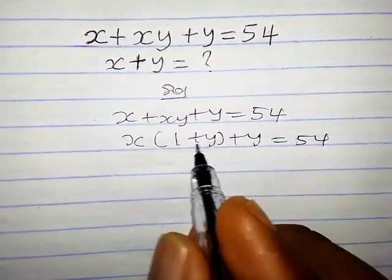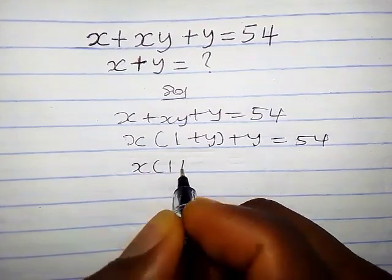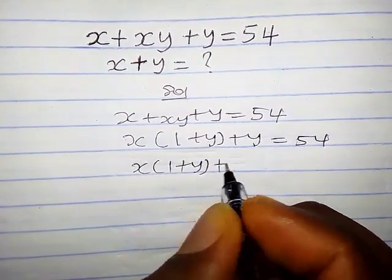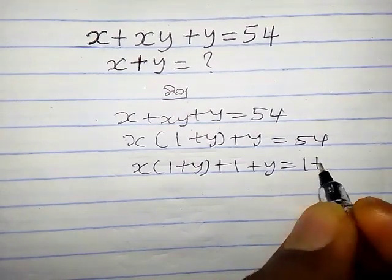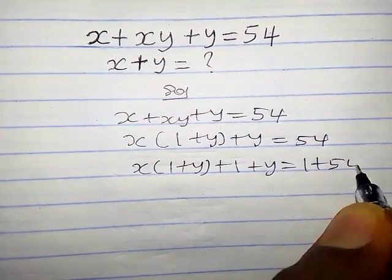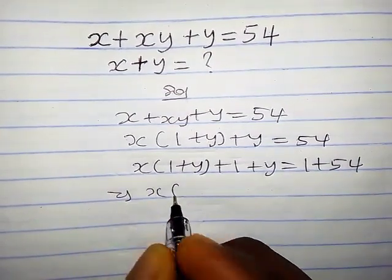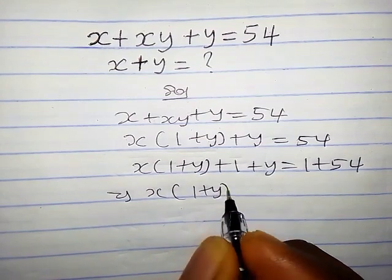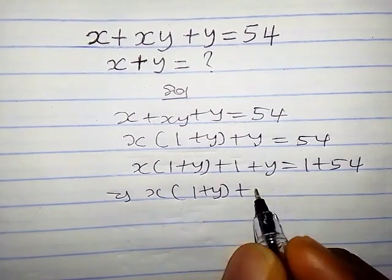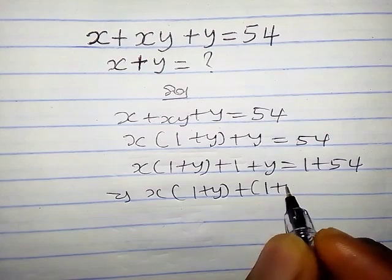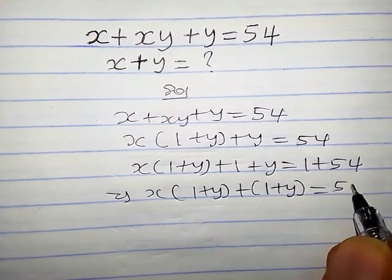The next step we are going to take, we are going to add 1 to both sides of this equation. So we have x into 1 plus y, plus 1 plus y, equals 1 plus 54. This gives us x into 1 plus y, plus 1 plus y, equals 55.